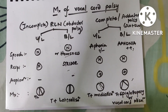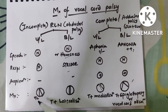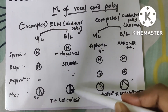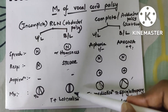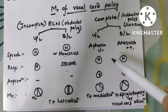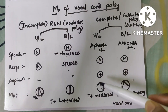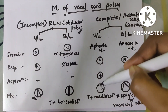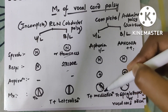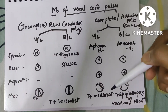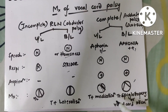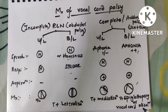For treatment: in unilateral RLN palsy, since everything is normal, conservative treatment is enough. In bilateral recurrent laryngeal nerve palsy, since the cords are very near to each other, we need to lateralize them — tracheostomy plus lateralization of the vocal cords. In unilateral complete palsy, since adduction is affected, the cord goes into abduction and the other side compensates — we do medialization, tracheostomy plus medialization. In bilateral complete palsy, we do tracheostomy, epiglottopexy, and vocal cord plication.